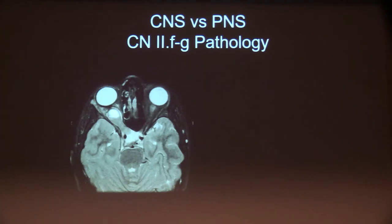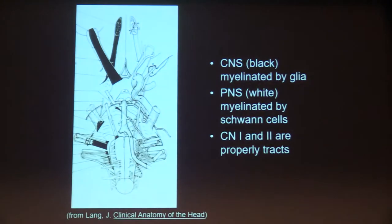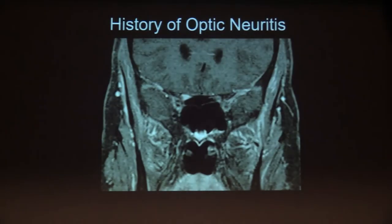This is to emphasize that a mass of the optic nerve cannot be a schwannoma through the foraminal segment — this is an optic nerve glioma, part of the central nervous system and centrally myelinated.